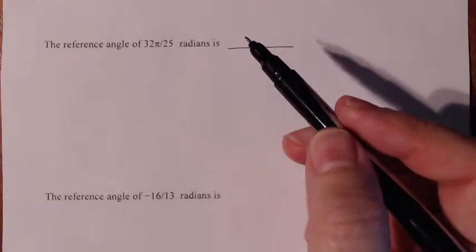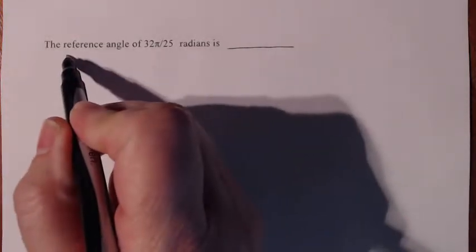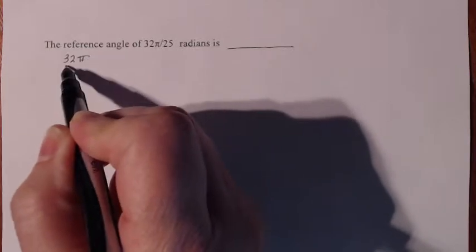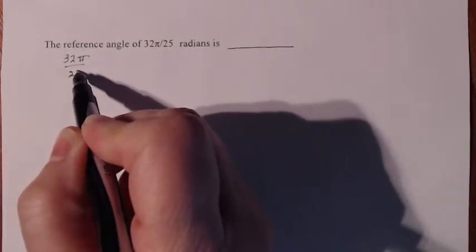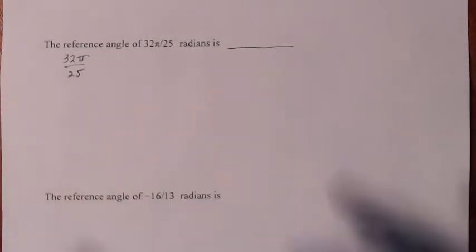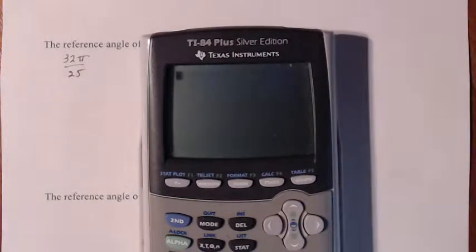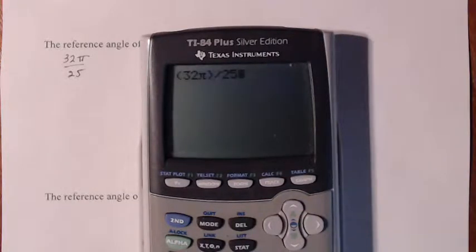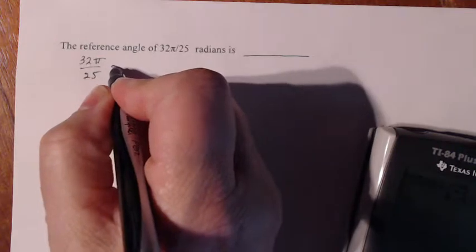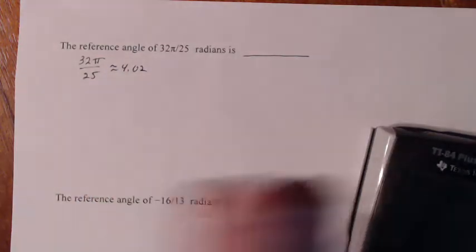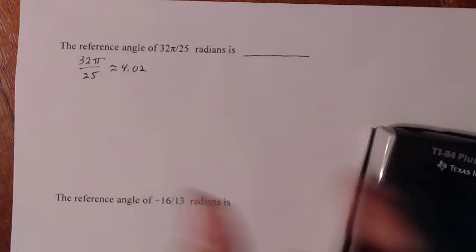I need to estimate what 32π over 25 is, and then see between which two angles that lies when you're on the circle. So if I compute 32π divided by 25, I get approximately 4.02. Now this is just set up so I can figure out what quadrant we're in.